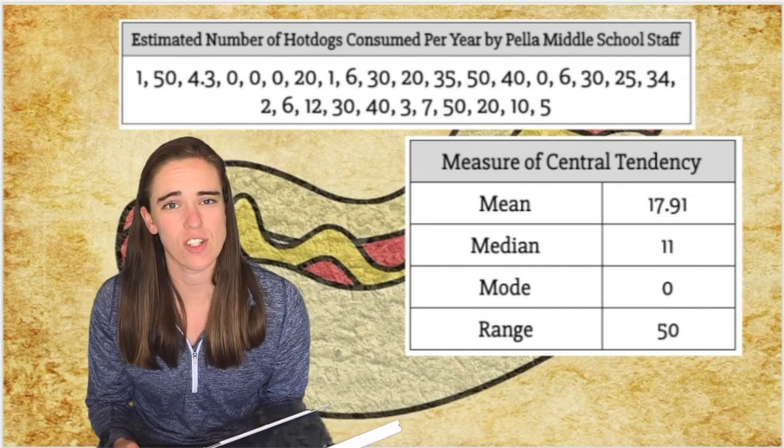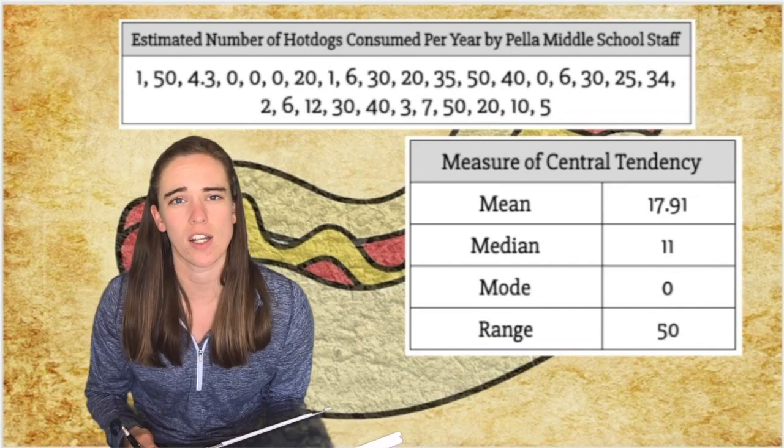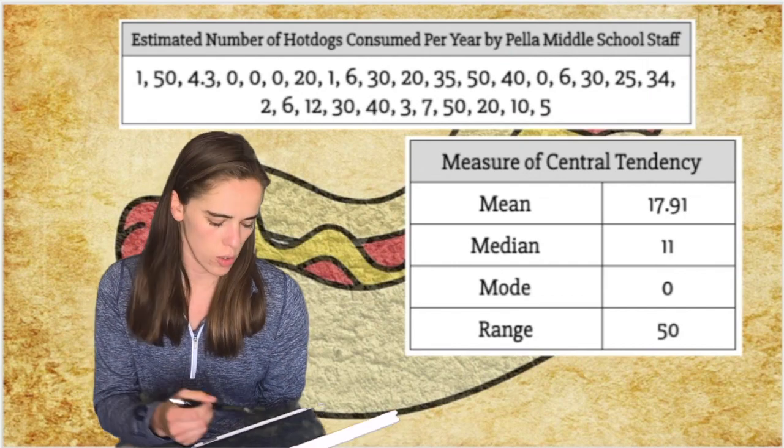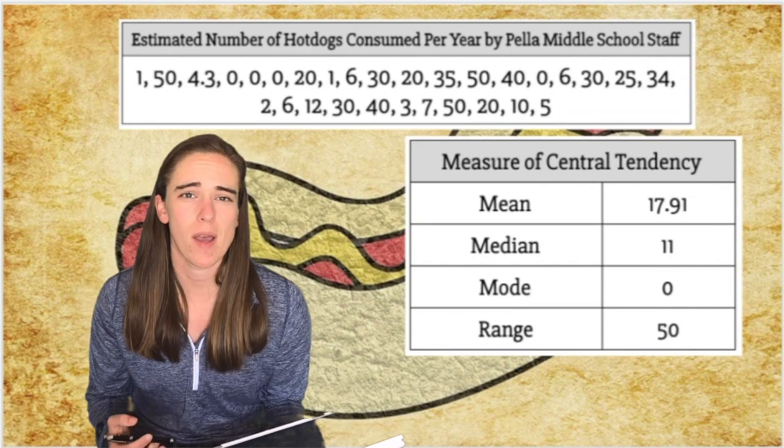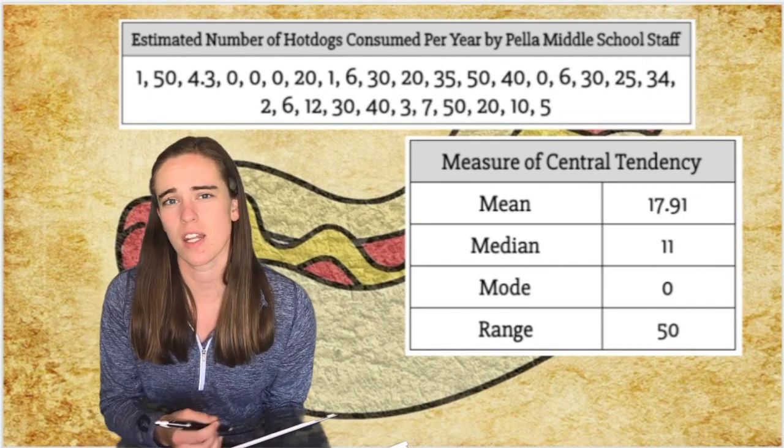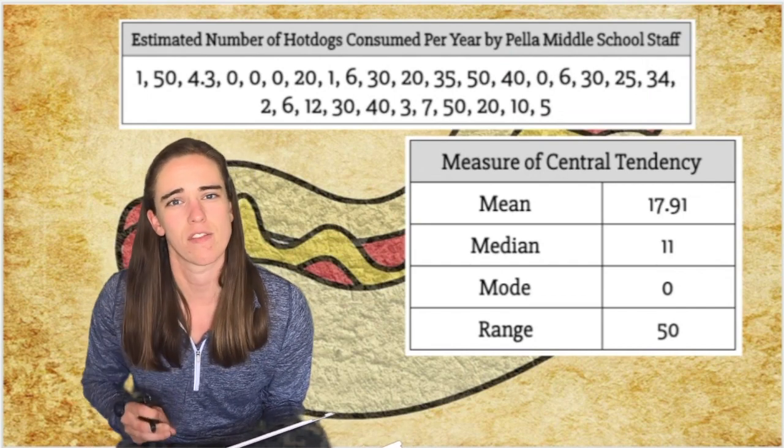However, if you were looking at just the number of people that eat hot dogs, we had a lot of people who don't eat very many. With the median being closer to zero, that might be more accurate because the median is just lining up people and picking out the very center person.